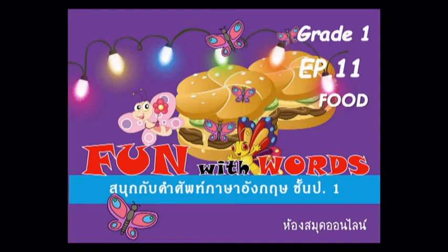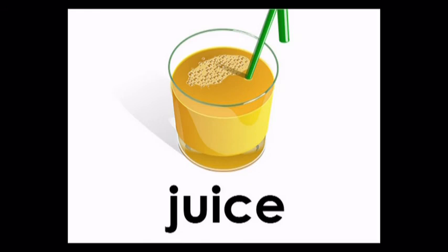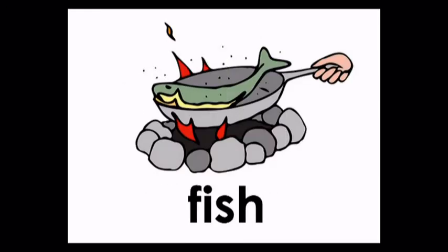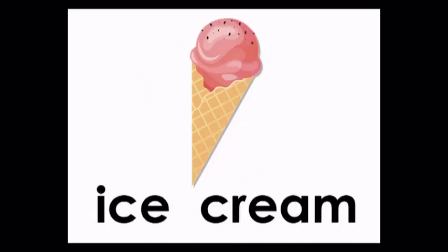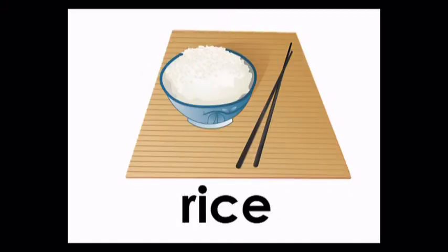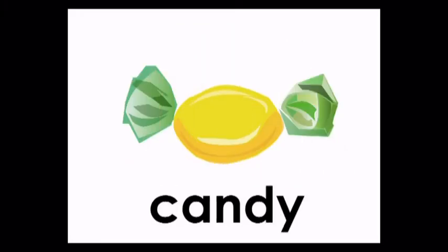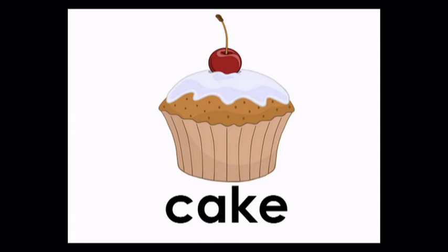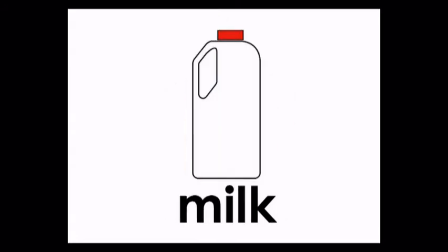Episode 11: Food – Juice, Chicken. Fish. Ice Cream, Rice, Candy. Ice. Cake. Milk.